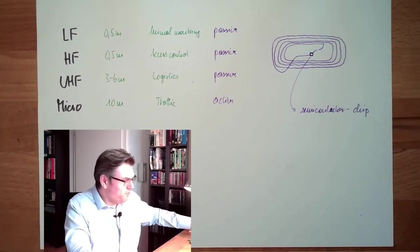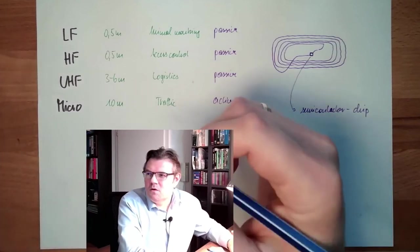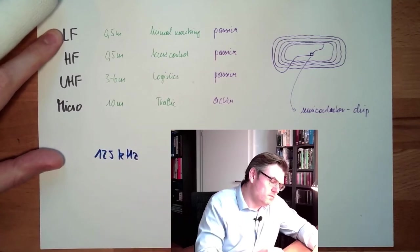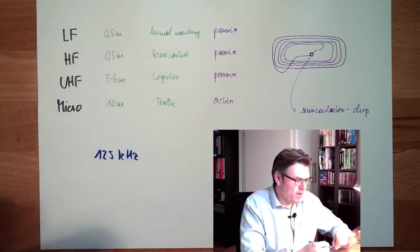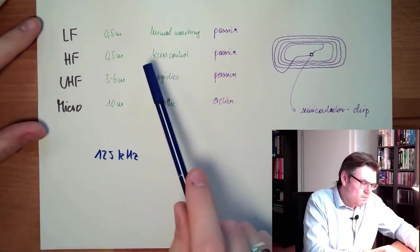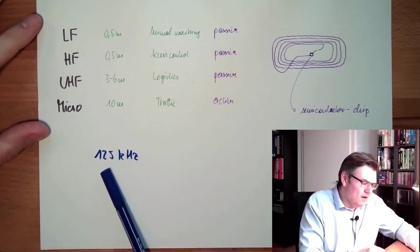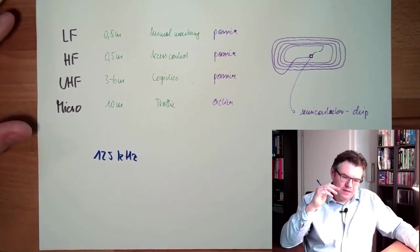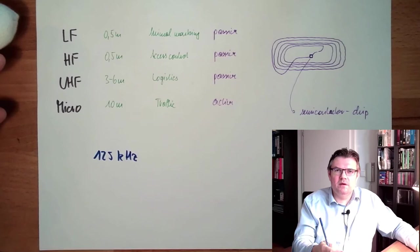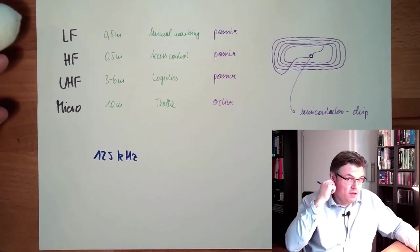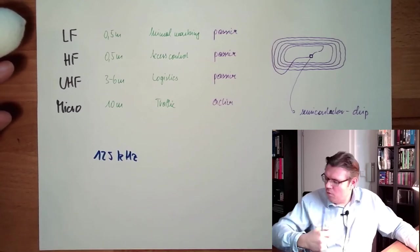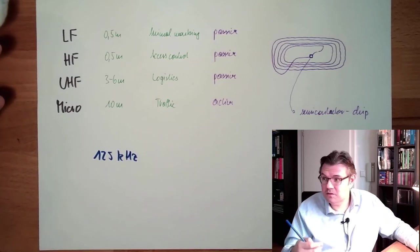What frequencies do we have? Well, the first ones were these 125 kilohertz elements. They are mainly used for animal marking and so on. Low frequency stuff. There are different form factors. For animal markers there are chips on the ear. There are things which are swallowed or operated in. Chipped cat, chipped dog and so on. We know those.